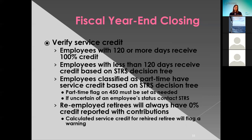To verify the service credit, employees with 120 or more days receive 100% credit. Any employees with less than 110 days receive credit based on the STRS decision tree. Those employees that are part-time have a service credit based on the STRS decision tree, so the part-time flag on the 450 must be set as needed. If they're uncertain whether employees should be part-time, they can contact STRS for help. Re-employed retirees will always show zero credit reported with contributions — if you have employees showing zero, double-check whether they're marked as retirees. The calculated service credit for a retiree will flag a warning. Any staff retiring and rehired in the same fiscal year will always appear twice on the report — once with contributions prior to retirement and once for after the retirement contributions.